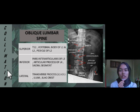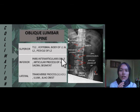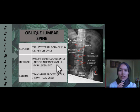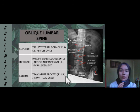For collimation, at the superior border the structures that should be included are T12 and vertebral bodies of L1 and L2. At the inferior border, structures that should be included are the pars interarticularis of L3, and the articular process of L4 and sacral segment. At the lateral border, structures that should be included are the transverse processes of L1 to L5, ilium, and iliac crest.